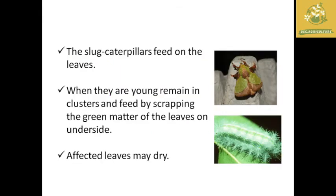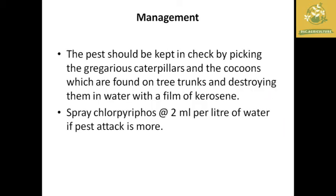The adult characteristics: it is an adult moth. The symptoms are that the larvae feed and scrape the leaves, causing them to dry out. These are the important symptoms. For management: first, picking and collection in the early stages — collect and destroy the infested leaves. Dip collected caterpillars in a bucket with a thin film of kerosene to kill the pest. Then spray 2 ml per liter of water chemical solution to control the pest attack.